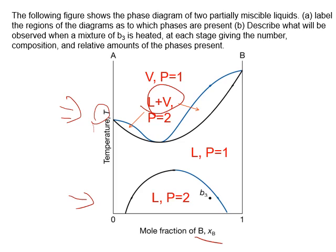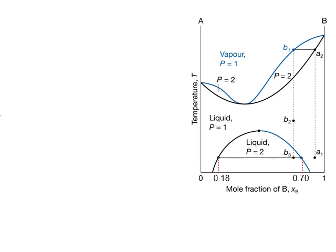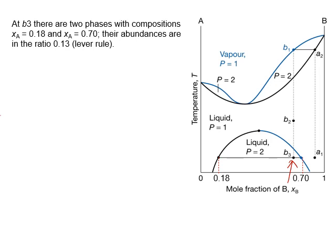The next question asks you to describe what will be observed when a mixture B3 is heated at each stage, giving the number, composition, and relative amount of phases present. B3 falls in the two-phase liquid region, so we draw the tie line and we have two phases. This can be called alpha phase and this can be called beta phase. Find the compositions: one is 0.18 and one is about 0.7.